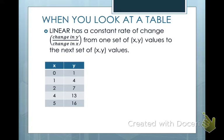We're going to look at several different things. When you look at a table, how do you tell if the data in the table represents a linear function? It represents linear if it has a constant rate of change. That means how the y values and x values change from one set of points to the next is constant.